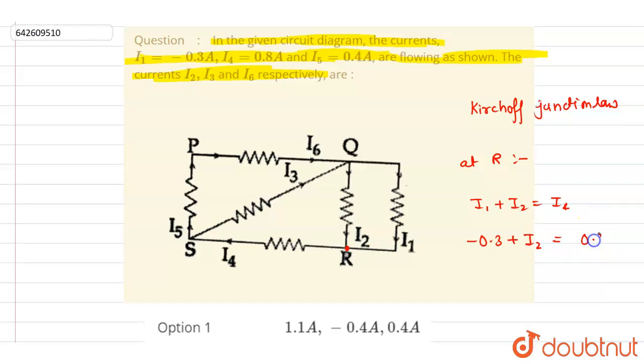So i4 here is 0.8. Though here i1 is negative sign, but we will go with the direction. Total incoming current is equal to total outgoing.